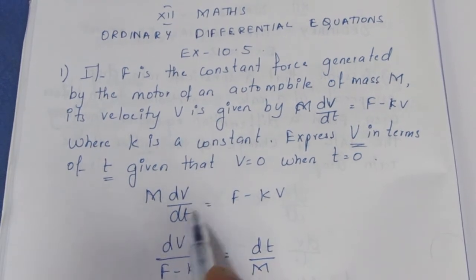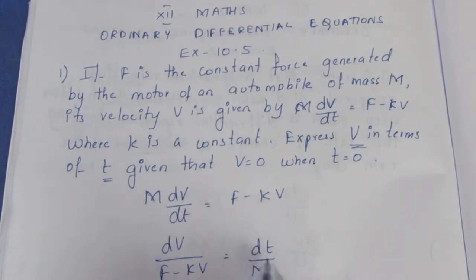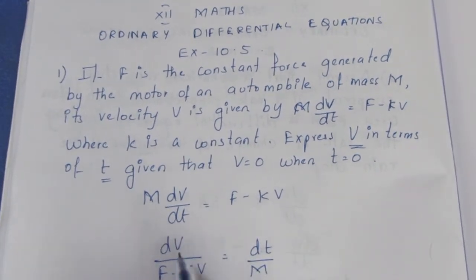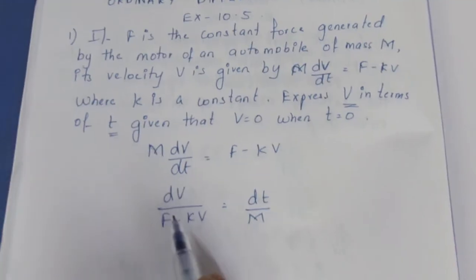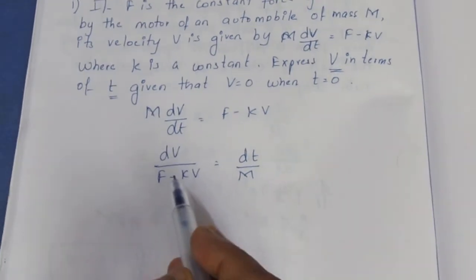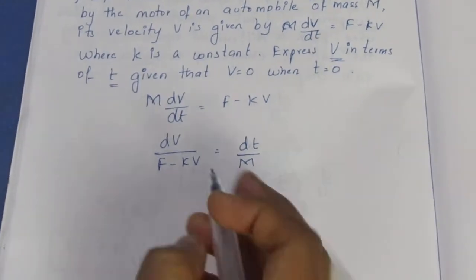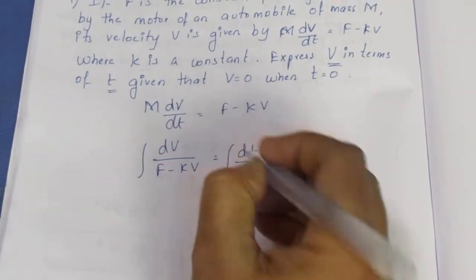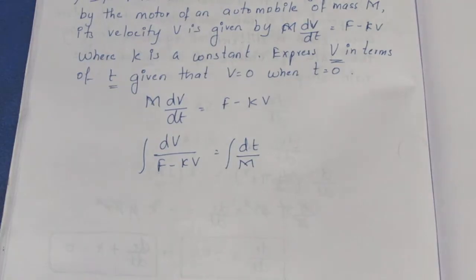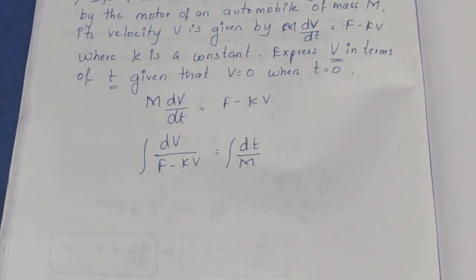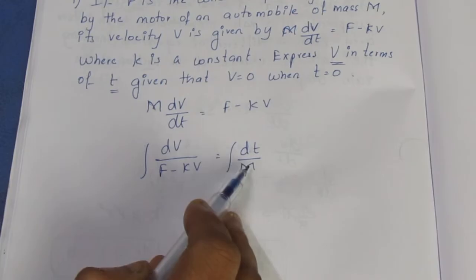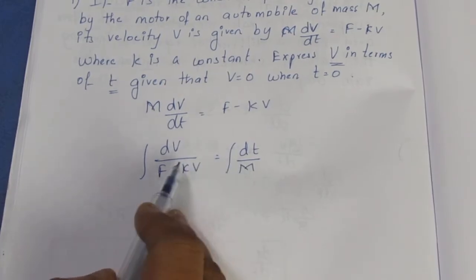So if we separate dV and dt, we can integrate both sides. Integration with respect to V on the left side, and integration with respect to T on the right side.